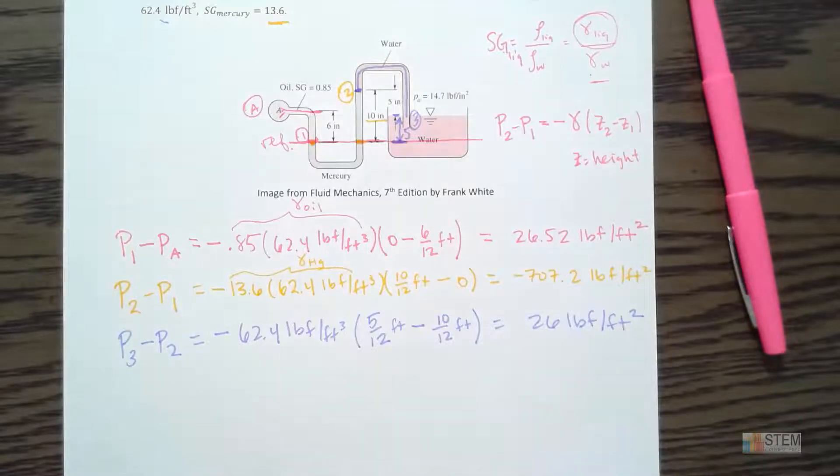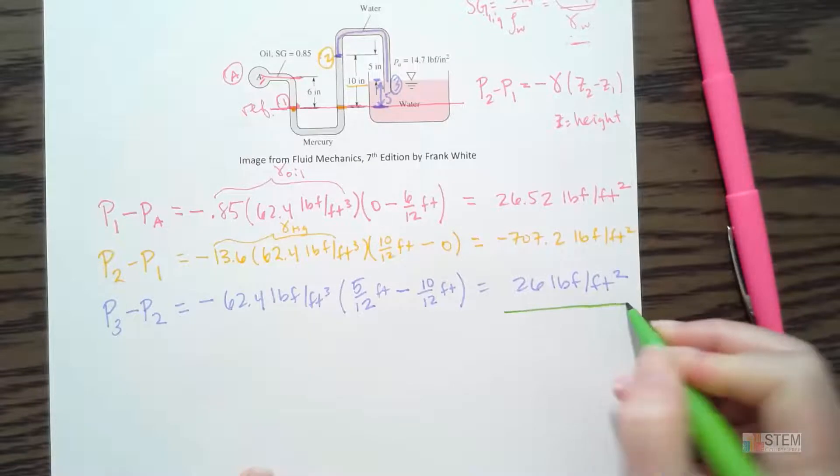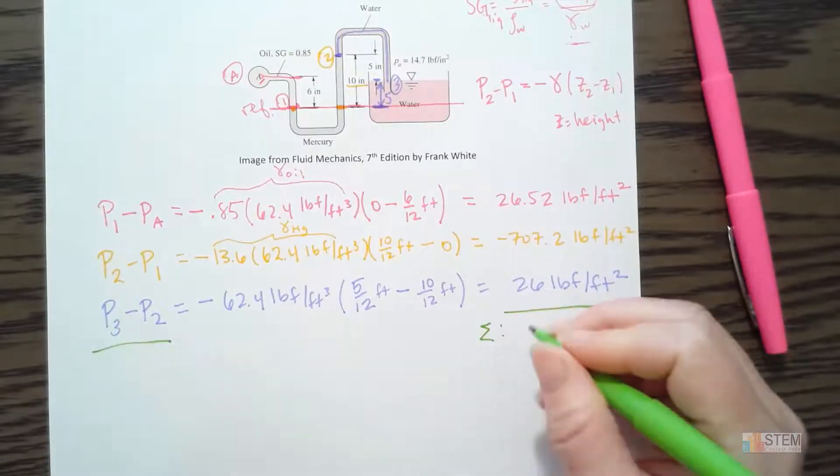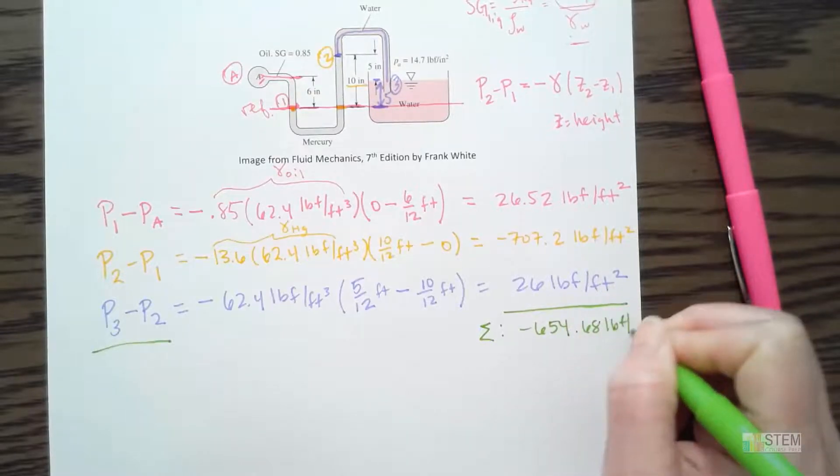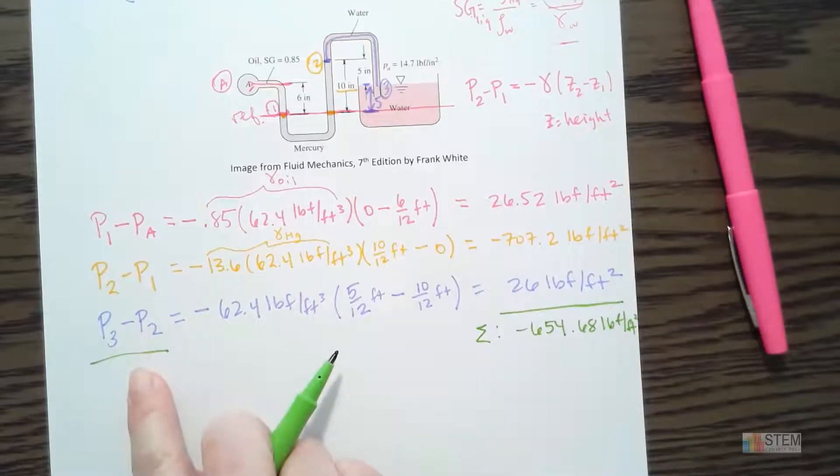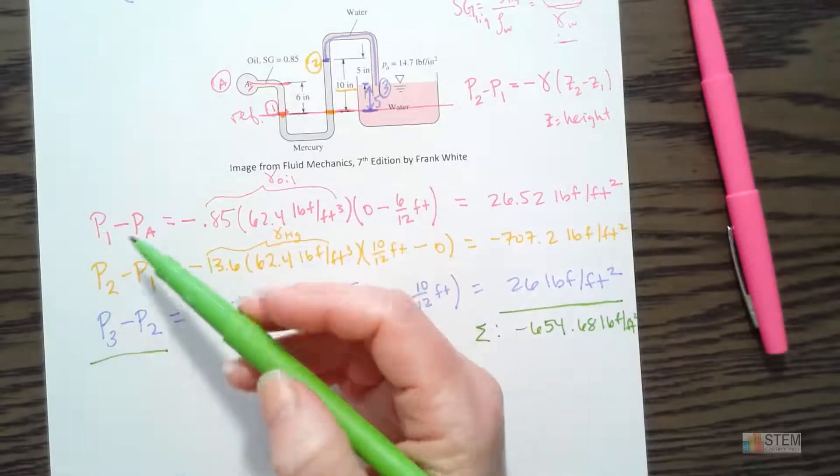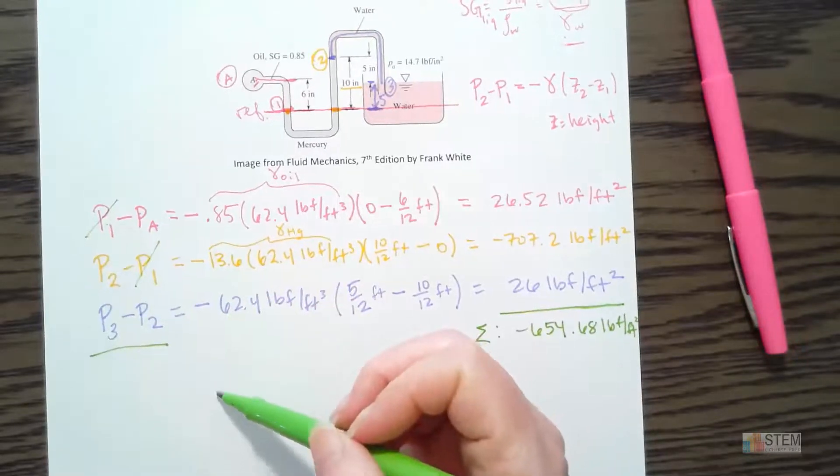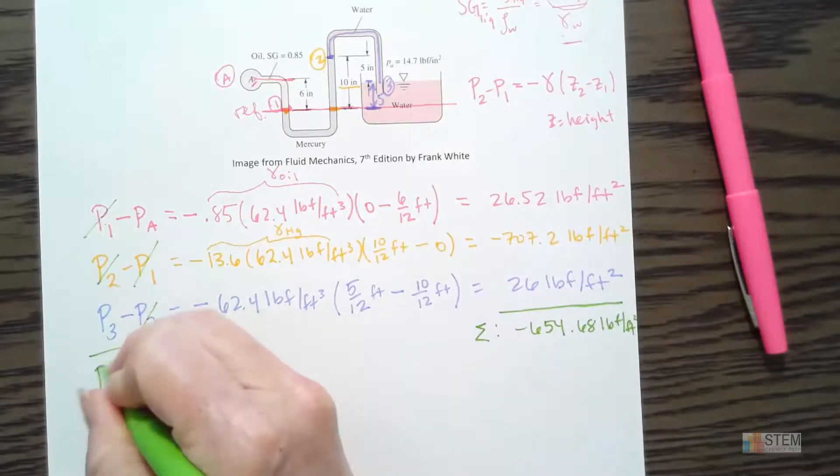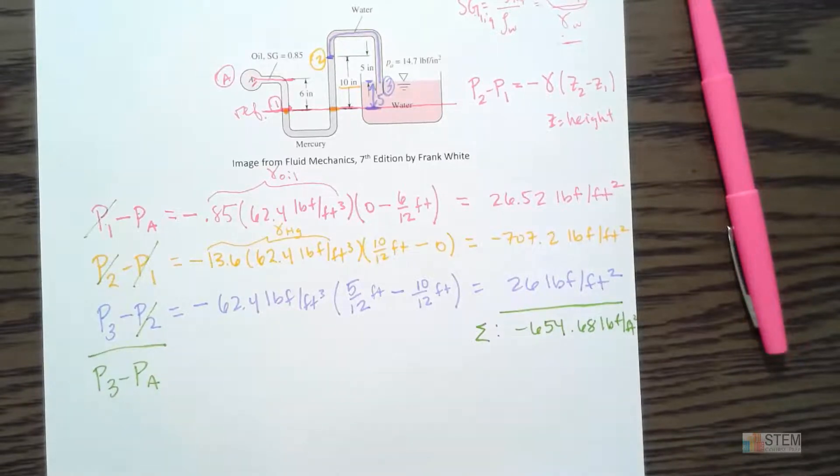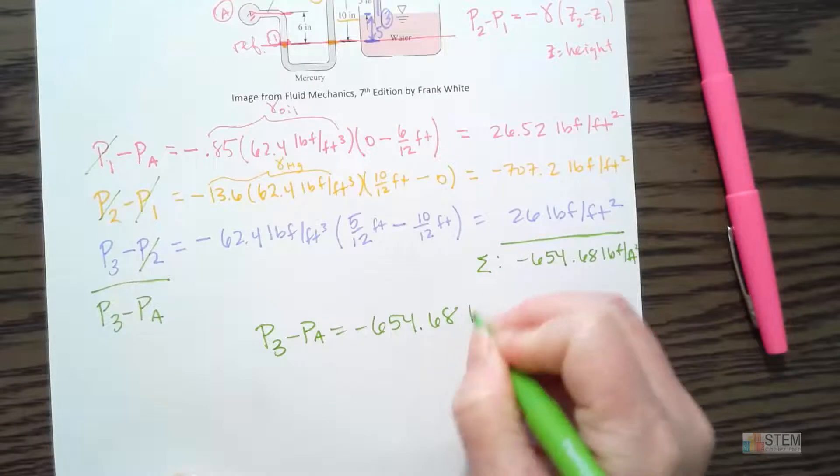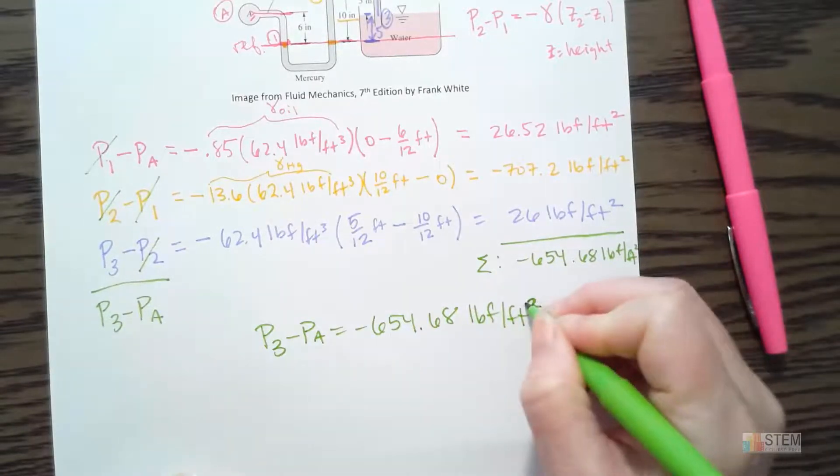Okay. So now we're done with the hard part. What we're going to do next is just get our final result. Okay. So what we're going to do now that we've worked our way around the whole manometer is I'm going to sum up these two columns. Okay. So let's start on this right side. Just add these together. And we get negative 654.68 pounds per square foot. And then over here, if you were to add all of these up, some of these are going to cancel, right? So if I have P1 minus PA plus P2 minus P1, the P1s cancel, right? Same thing with the P2s because I got a positive and a negative. So this is going to leave me with P3 minus PA.